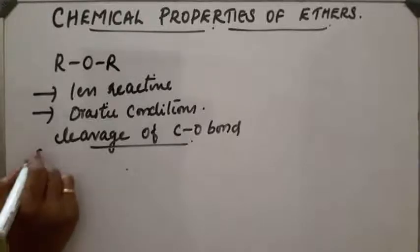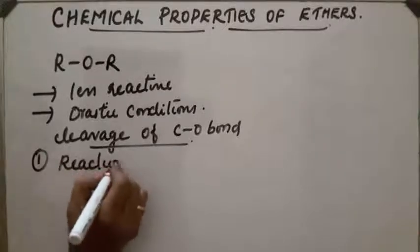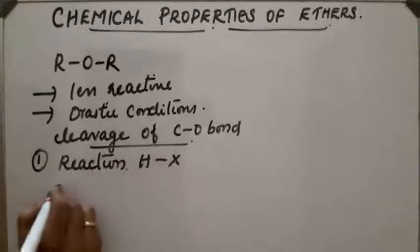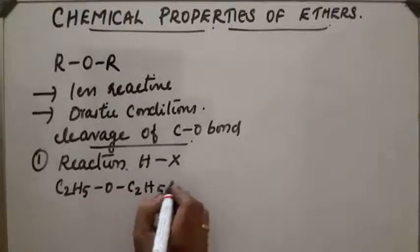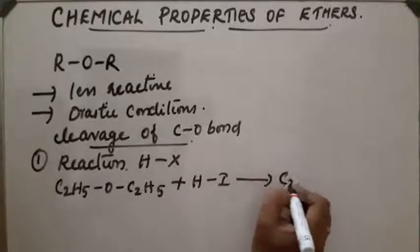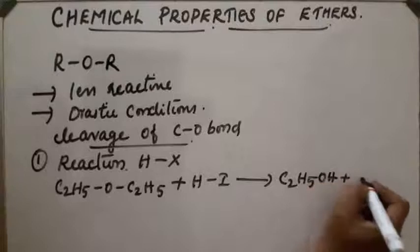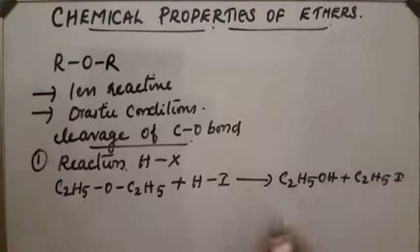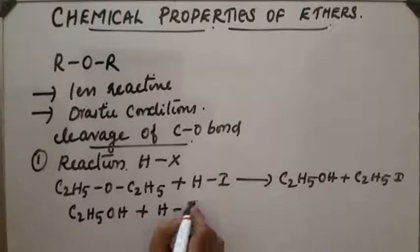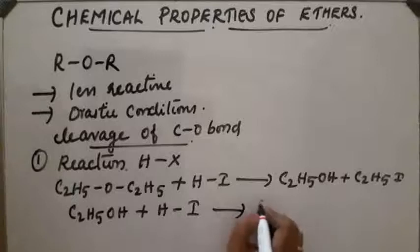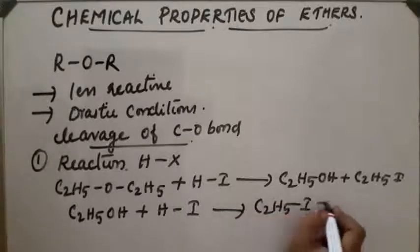The first reaction is with alkyl halide HX. For example, diethyl ether (C2H5-O-C2H5) on reaction with HI gives C2H5OH plus C2H5I. If HI is in excess, this alcohol again gets converted into an alkyl halide on further reaction with HI.